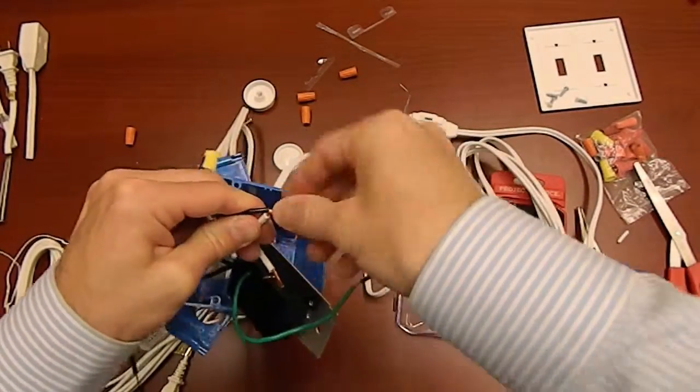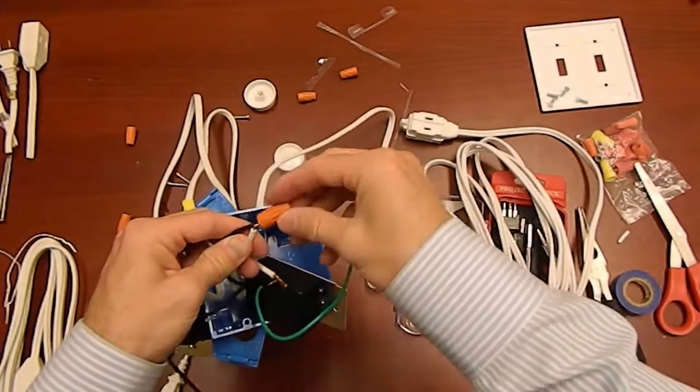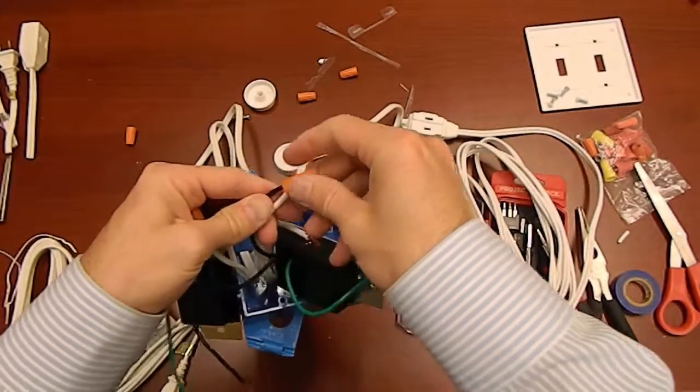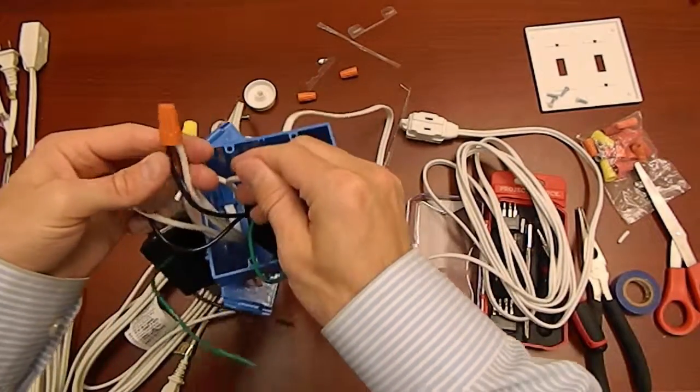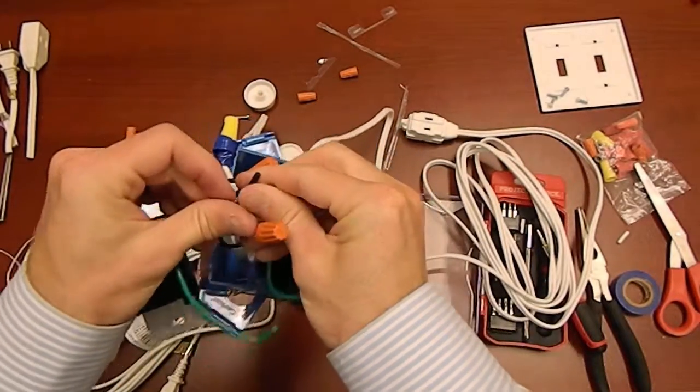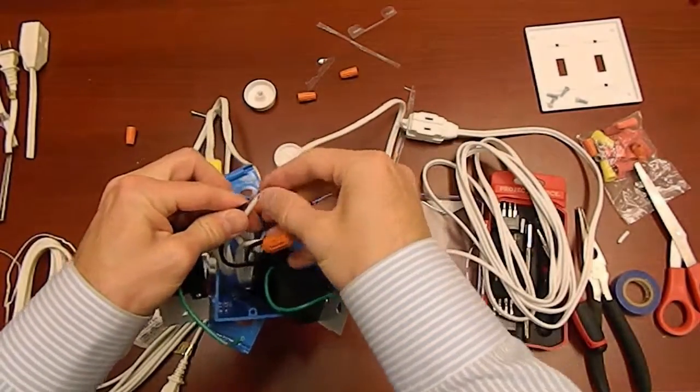Now one thing that bugs me a bit is I don't have grounded plugs here, but for the light bulbs that I'm using, simple two prong sockets is really all I need. So I'm just going to end up joining the ground wires together in case I want to upgrade later. And then of course here I tape them together too.